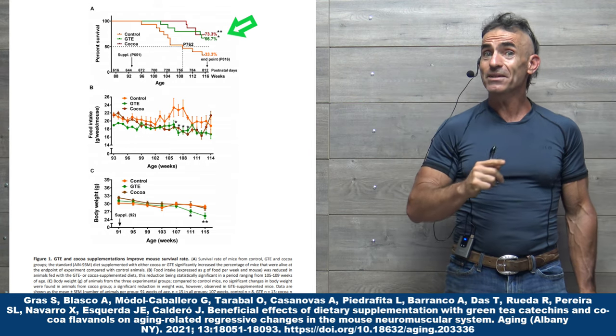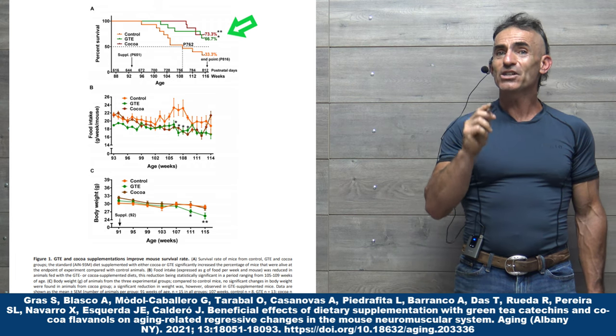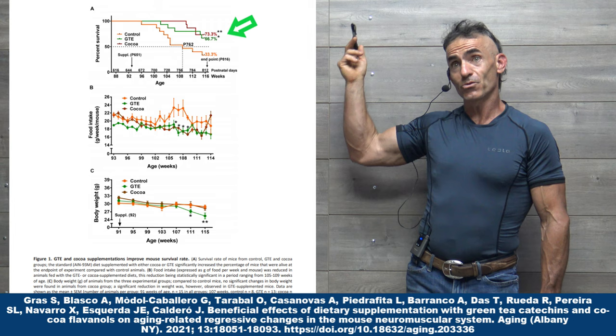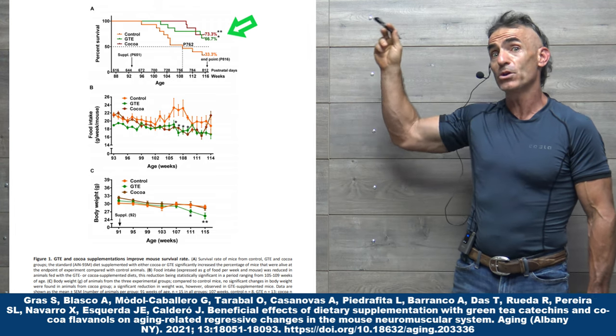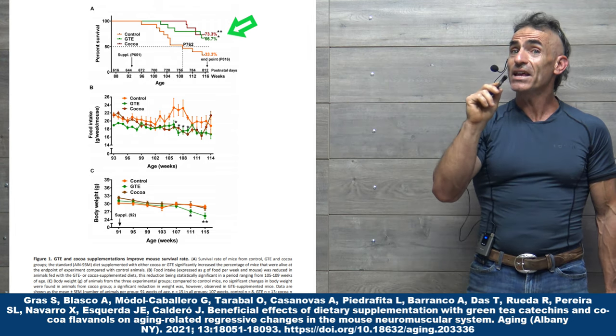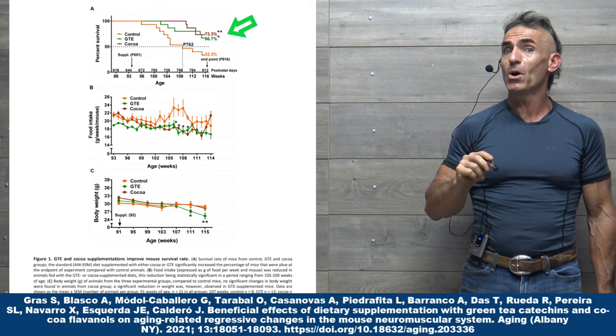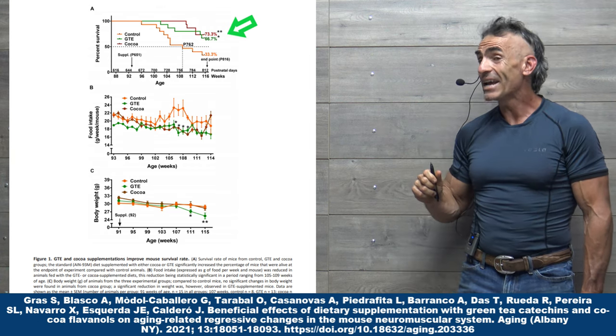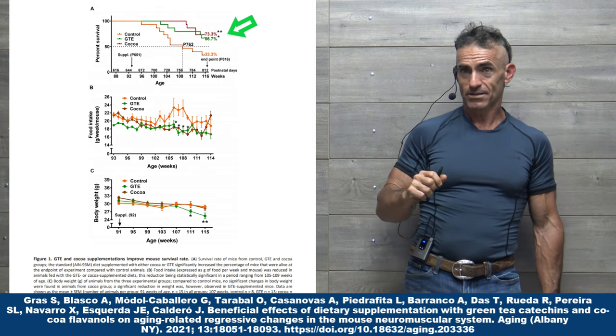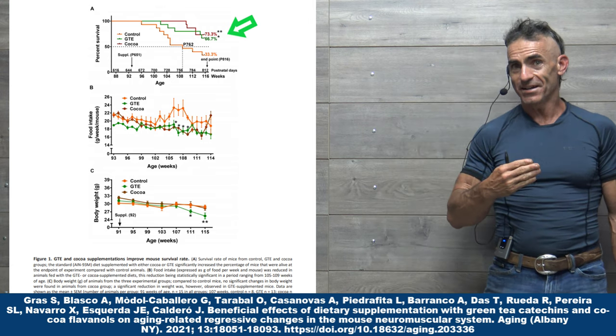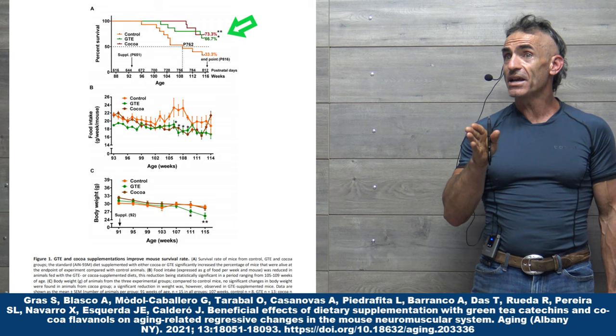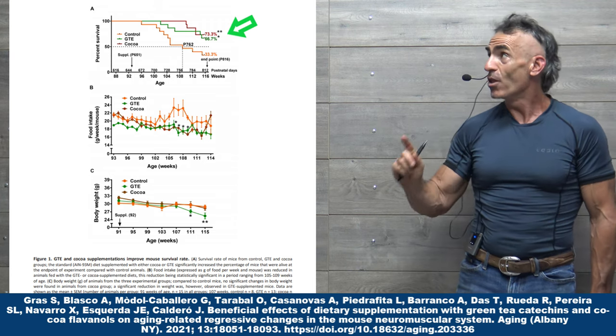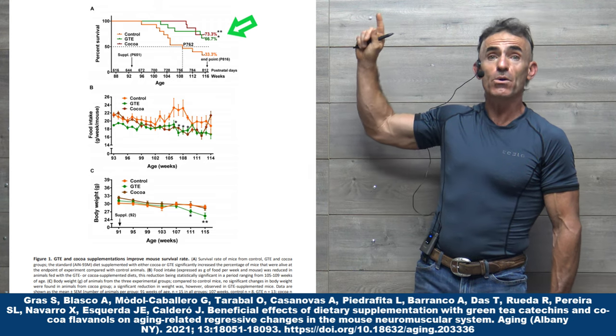Now you know where it gets really amazing? They did not start feeding the other groups, the green tea catechins group or the cocoa flavanol group, they did not start feeding those particular components until starting at 92 weeks. So it wasn't like they were brought up on it. It was basically something interjected towards the end of life expectancy. And look at the results. They are incredible.